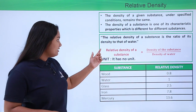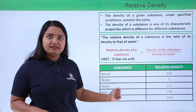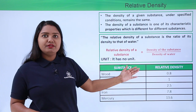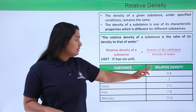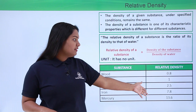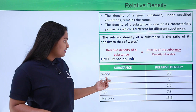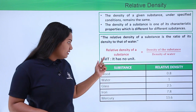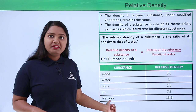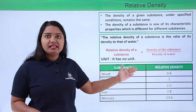In this table I have shown some substances with their respective relative densities. For wood it is 0.8 — you can clearly see that no unit is mentioned anywhere in the table. Water has a relative density of 1, it is 2.5 for glass, iron's relative density is 7.8, and for mercury it is 13.6. So these are some substances with their relative densities.